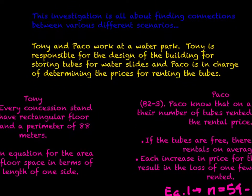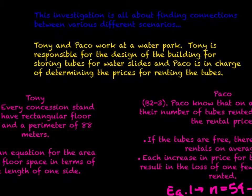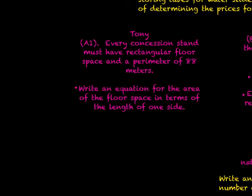This investigation is all about finding connections between various equations. Tony and Paco work for a water park. Tony is responsible for the design of the building for storing tubes for the water slides, and Paco is in charge of determining the prices for renting the tubes. So they have two different jobs but clearly work in the same area, the tube rental business essentially. Let's look specifically at Tony's job.